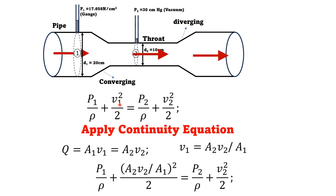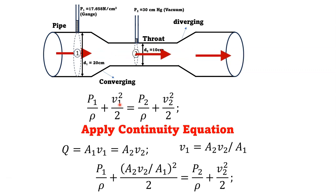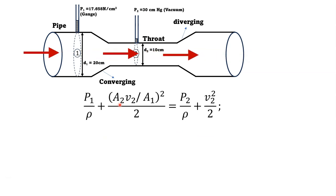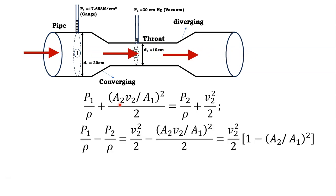After substituting V1 = A2·V2/A1 into Bernoulli's equation, we get: P1/ρ + (A2·V2/A1)²/2 = P2/ρ + V2²/2. The goal is to calculate the velocity at the throat V2. Knowing V2 and the throat area A2, we can compute discharge Q = A2·V2 and then mass flow rate.